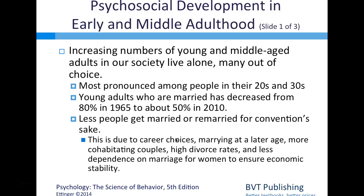In psychosocial development, increasing numbers of young and middle-aged adults live alone, many by choice—most pronounced among people in their 20s and 30s. Young adults who are married decreased from 80% in 1965 to about 50% in 2010, due in part to career choices, marrying at a later age, more cohabitating couples, high divorce rates, and less dependence on marriage for women to ensure economic stability.